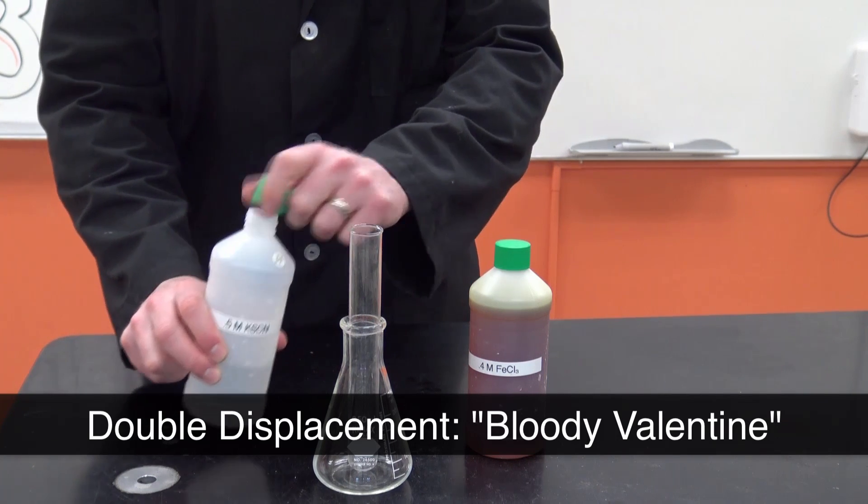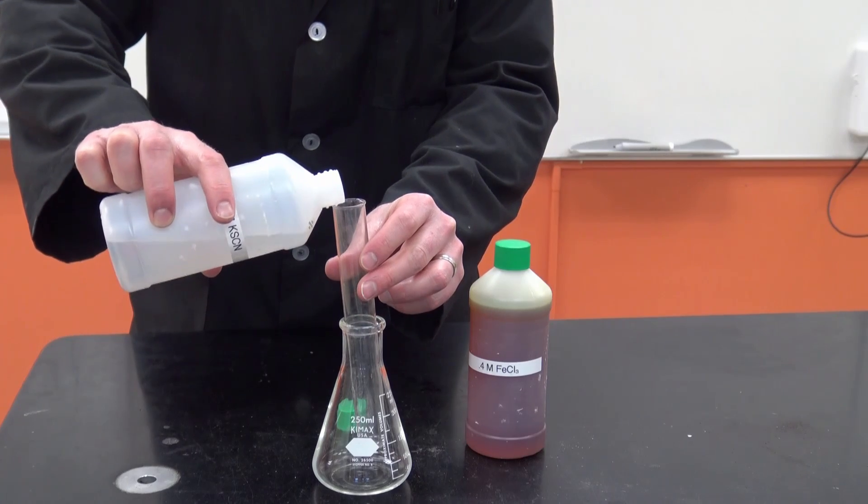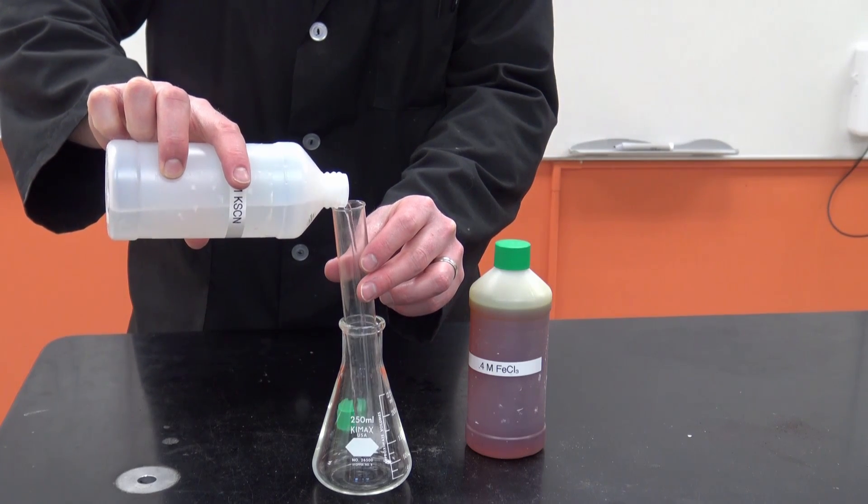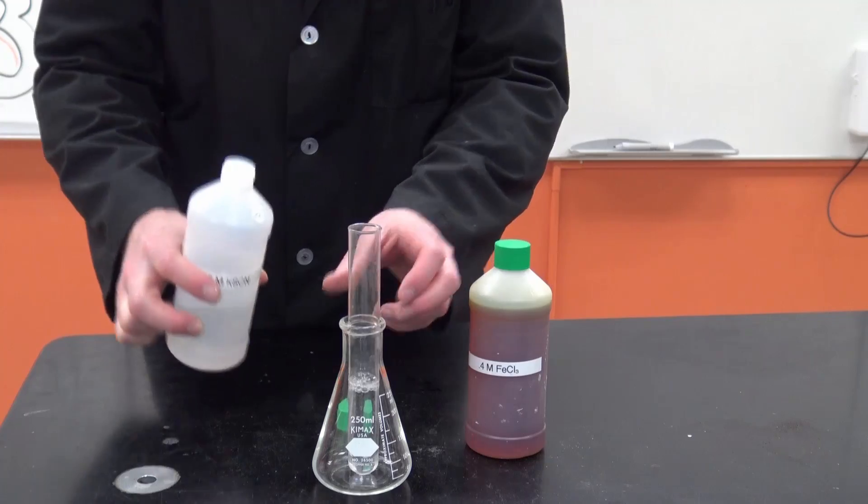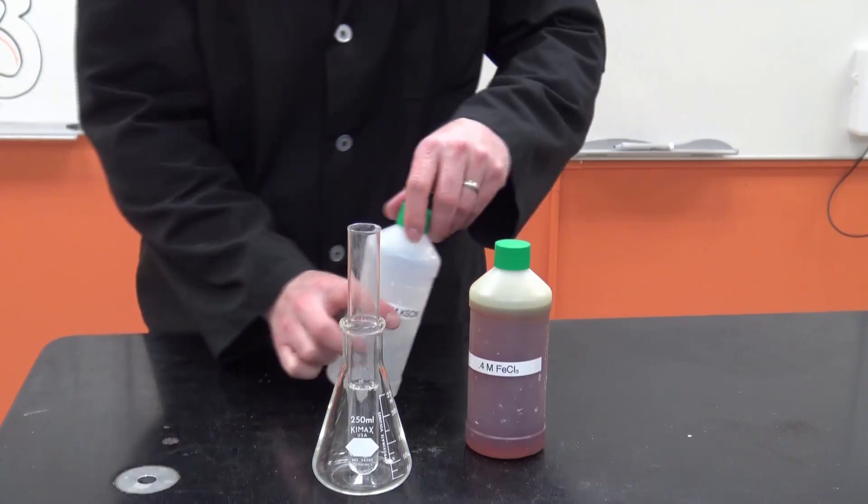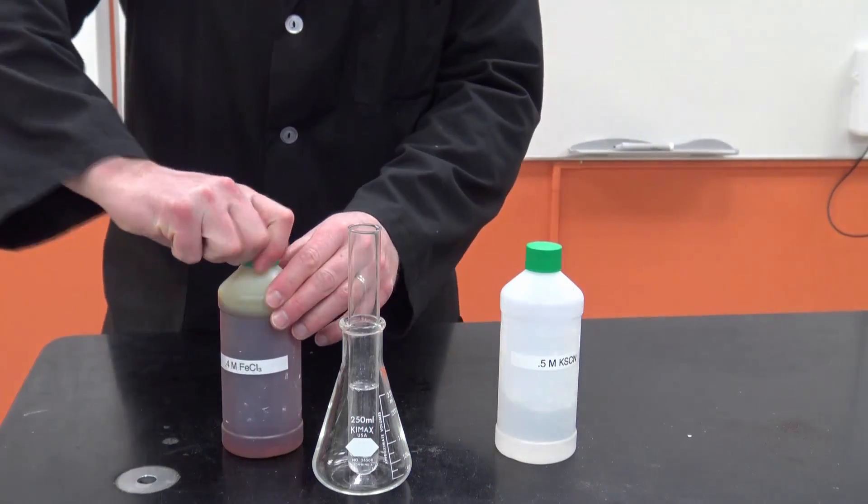This is called the bloody valentine. This is part of a valentine's lab with a bunch of chemical reaction stations that we do. And so this is the potassium thiocyanate. I'm just dumping some in there. You can do this on a micro scale. You can do it on a macro scale if you want.